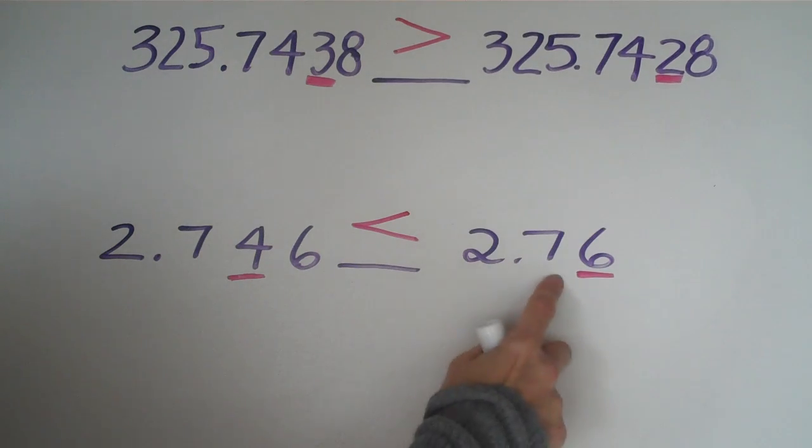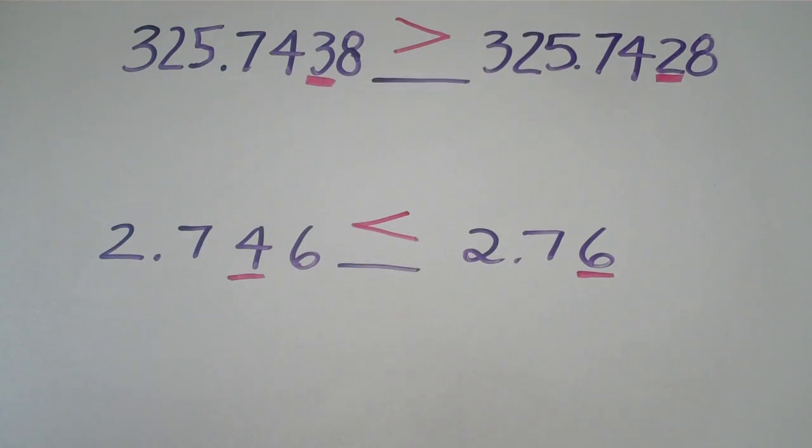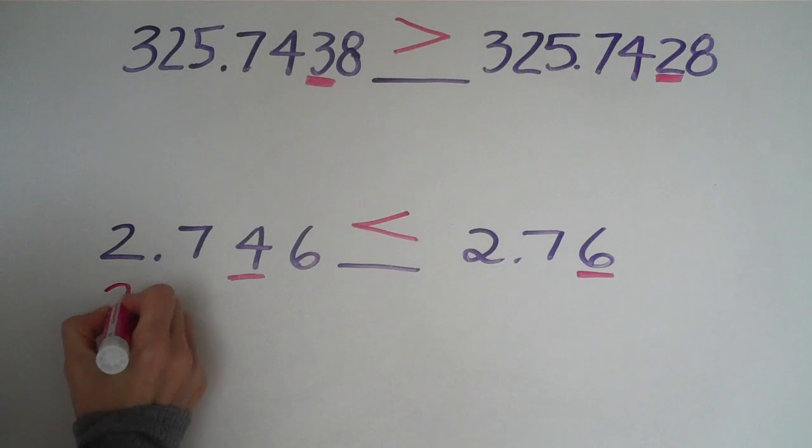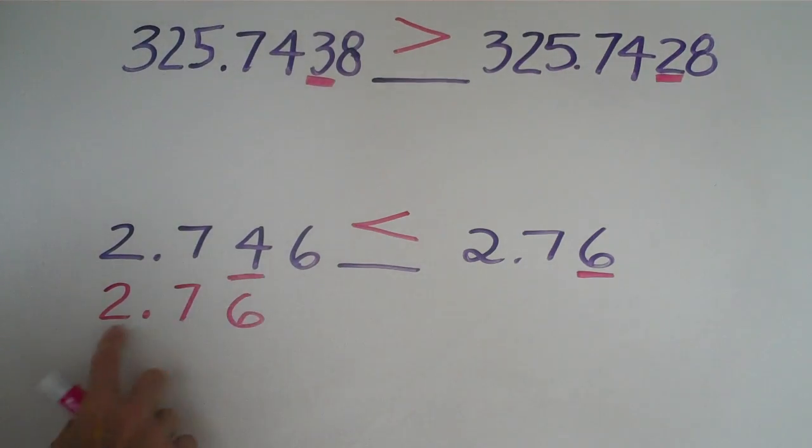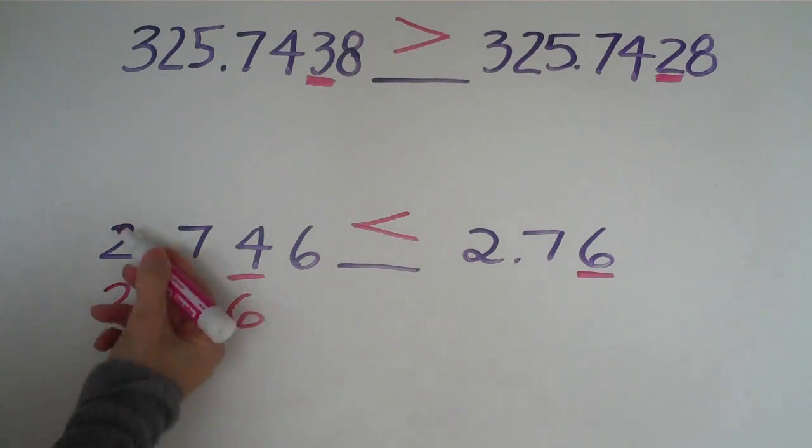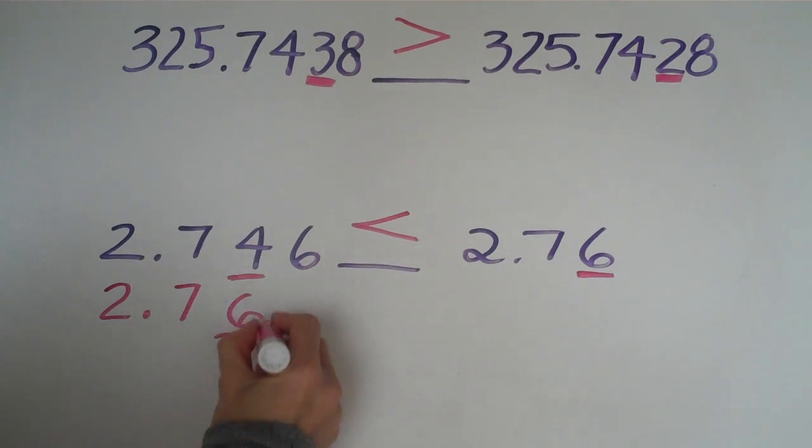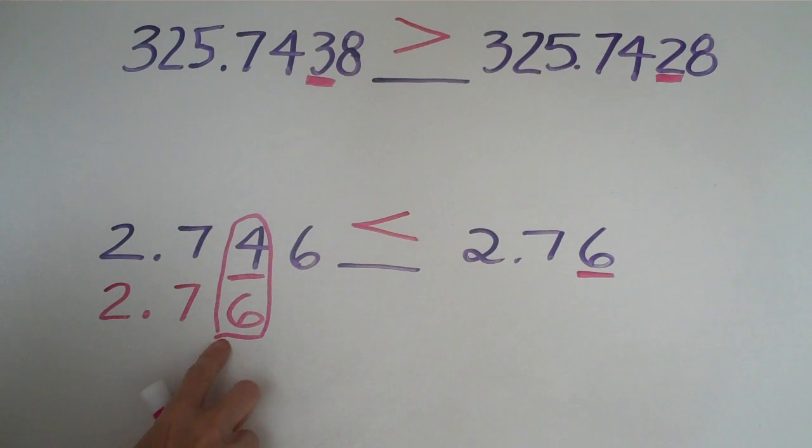If you wanted to you could rewrite this number right underneath 2.76 and you might be able to see it more clearly. These two are the same, these two, and here's where they're different. And you can clearly see that the bigger number is the bottom one.